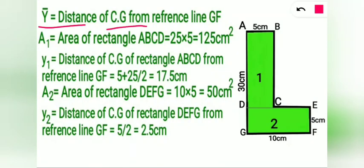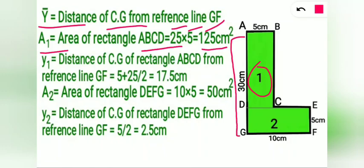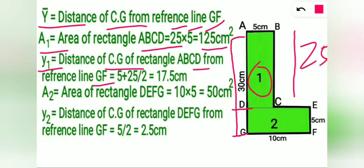Y bar is the distance of center of gravity from reference line GF. Let A1 be the area of rectangle ABCD, which is equal to 25 centimeter into 5 centimeter, which gives us the value of 125 centimeter square. This 25 comes from the whole length of web minus the width of flange, which equals 25. Let Y1 be the distance of CG of rectangle ABCD from reference line GF, which will be equal to 5 centimeter plus 25 centimeter divided by 2, which is equivalent to 17.5 centimeter.